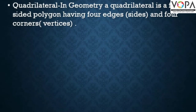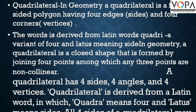Quadrilateral. In geometry, a quadrilateral is a four-sided polygon having four edges, sides, and four corners, vertices. The word is derived from the Latin word quadri, a variant of four, and lattice meaning side.